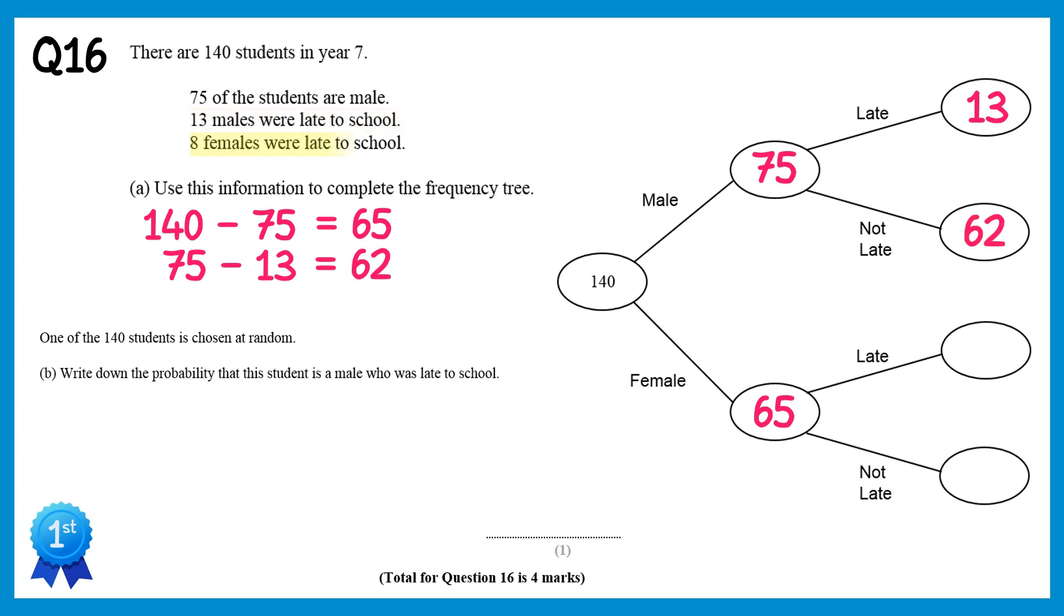We're also told that 8 females were late, we can write that straight in, so if we do the total female 65, take away those that were late, we'll get those that were not late, which is 57. For part B, we're trying to find the probability that a selected student is a male who was late for school. There are 13 males who were late for school, and 140 students altogether, so the probability is 13 out of 140.